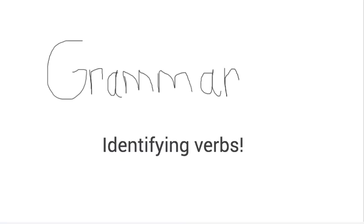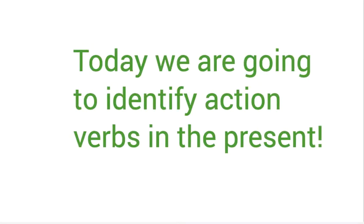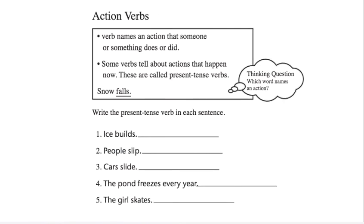Grammar. We are going to talk about identifying verbs. We are going to identify action verbs in the present. So let's discuss that. A verb names an action that someone or something does or did. Some verbs tell about actions that happen now. These are called present tense verbs.